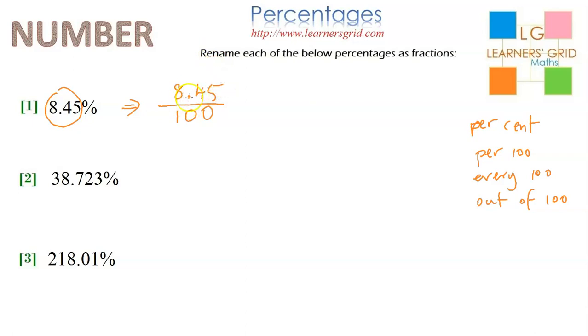Now, this can't stay like this. We can't have a decimal as part of a fraction. So I'm going to convert this 8.45 into a whole number by moving the decimal point one, two spaces to the right. So it's here. That will turn 8.45 into 845.